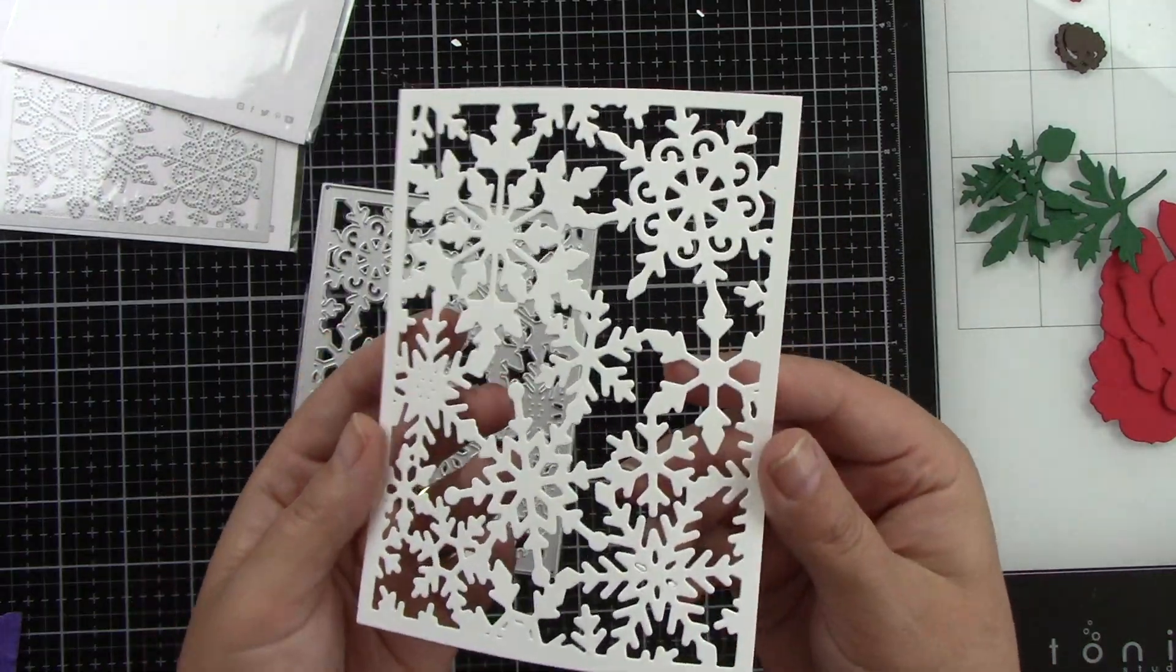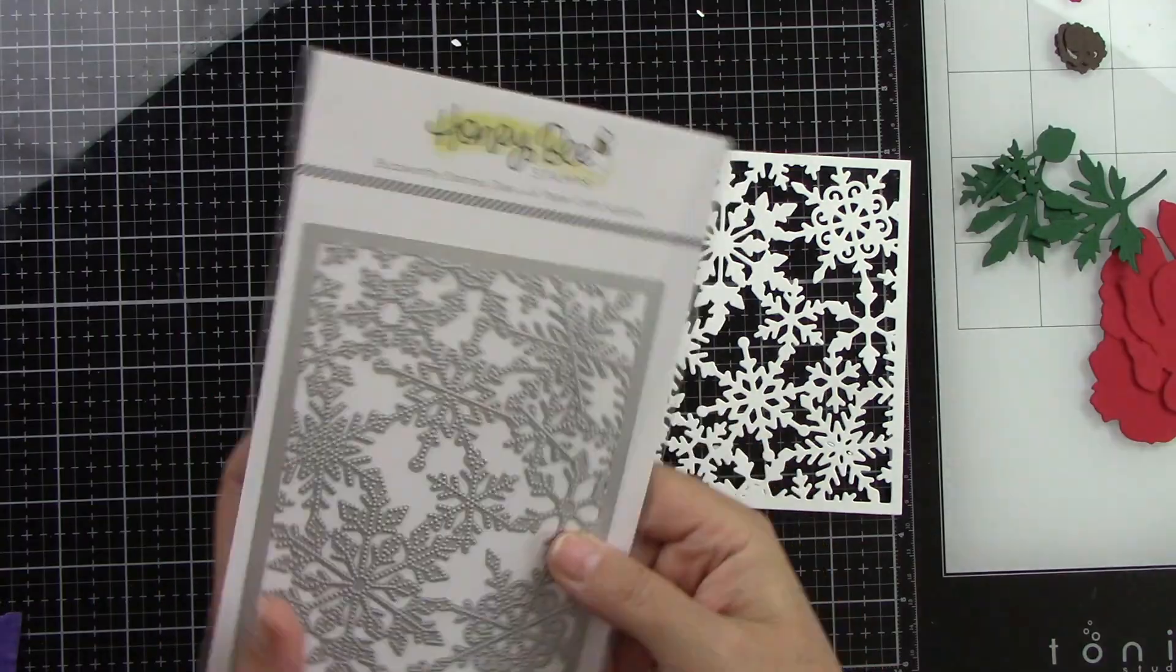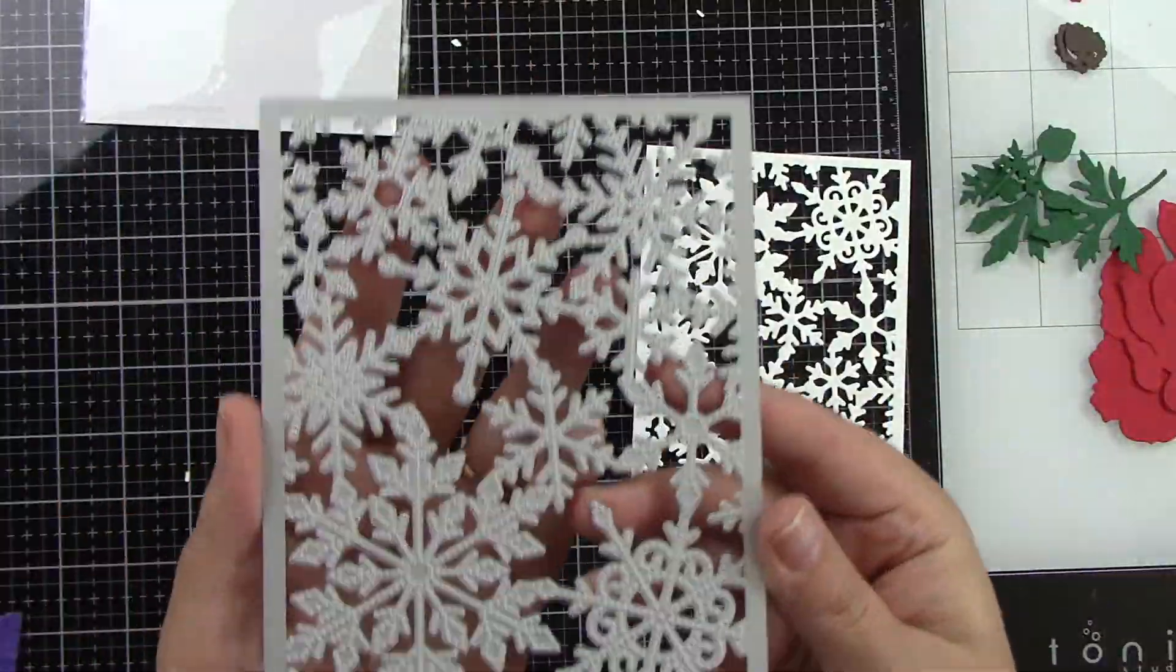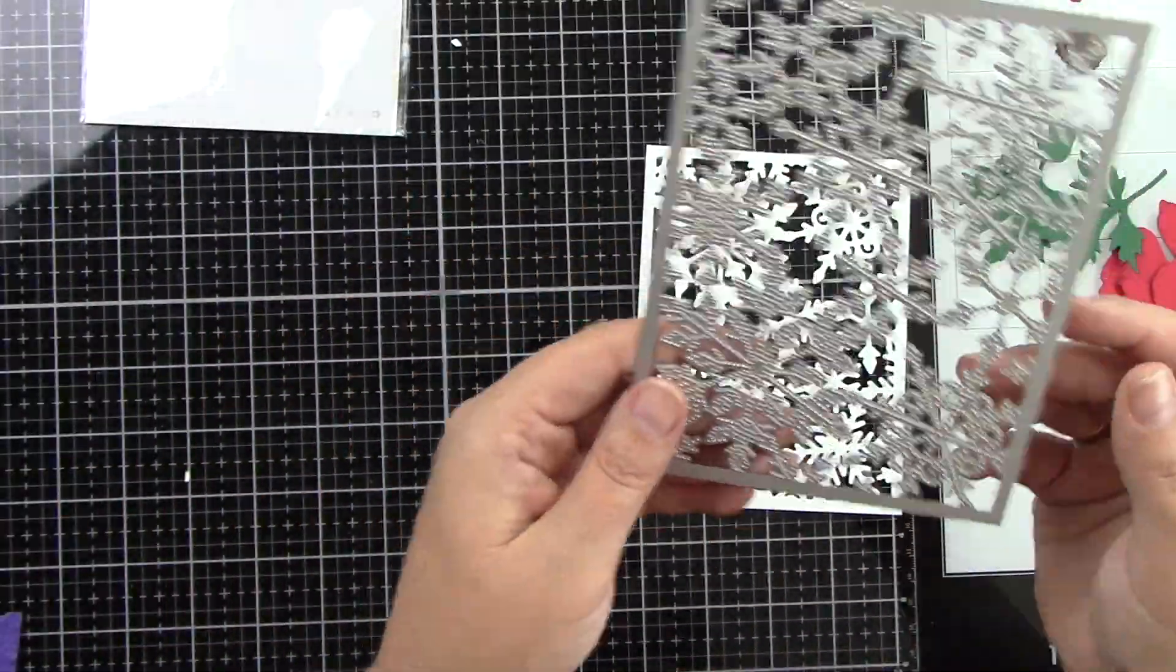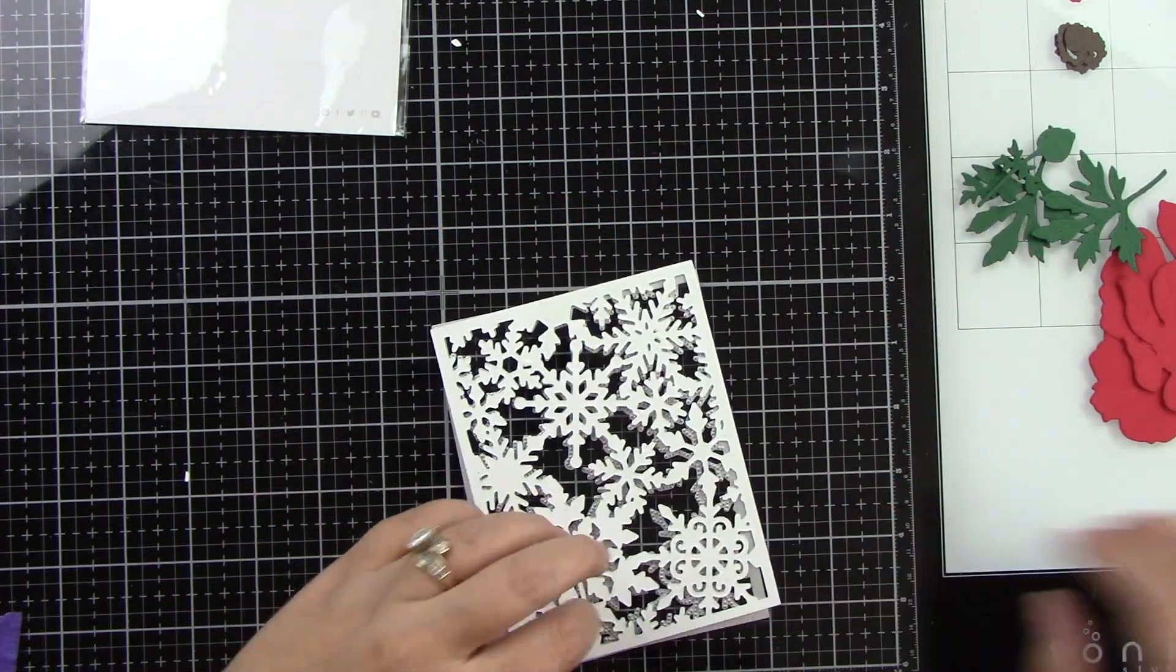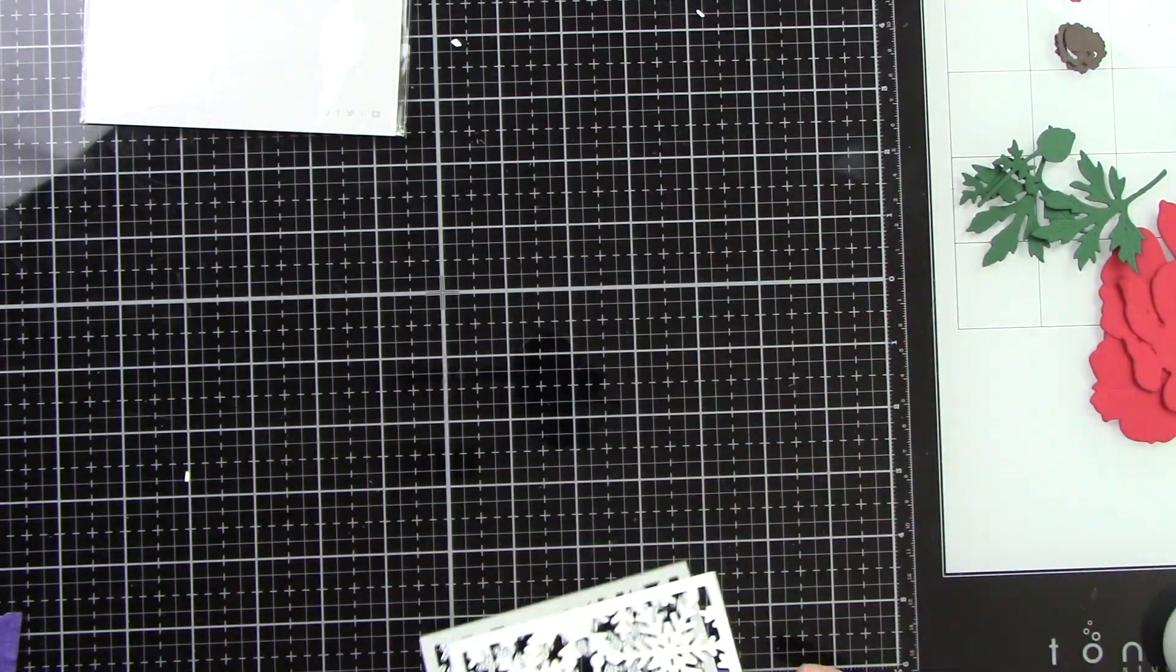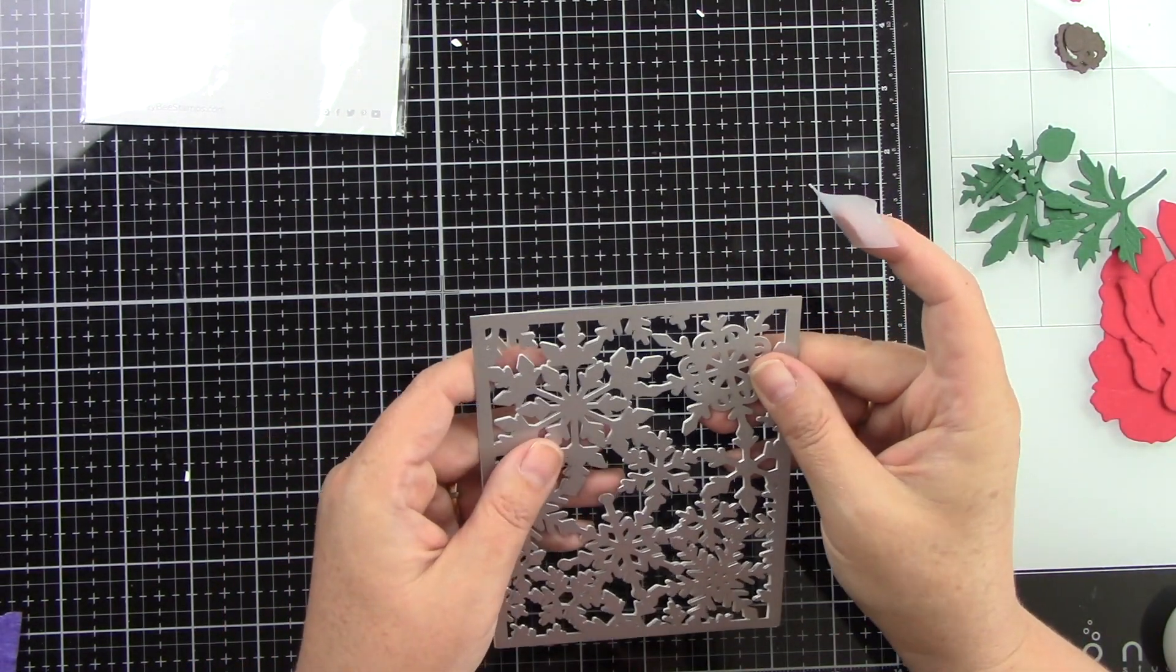Now here is that Fancy Flakes A2 cover plate I die cut from white cardstock. Then I'm going to bring in the pierced A2 cover plate to add some gorgeous detail to these already beautiful snowflakes. So I'm just going to tape this in place with some low tack tape and run that through my die cut machine.